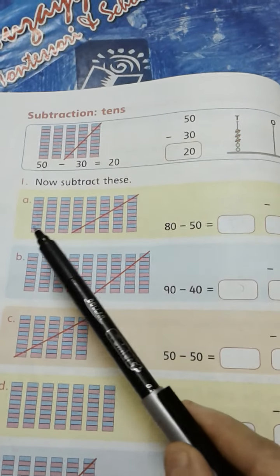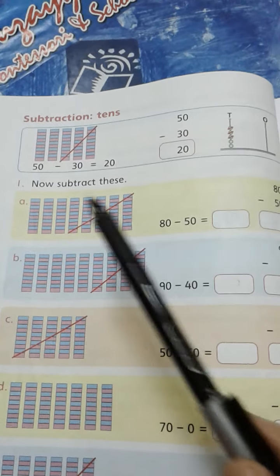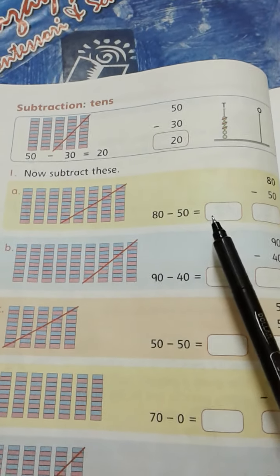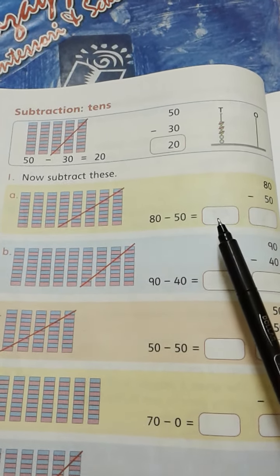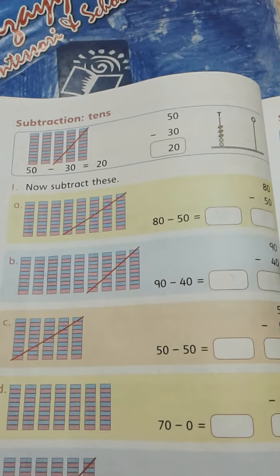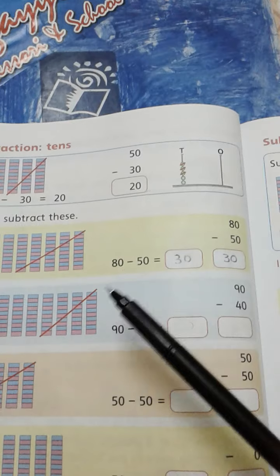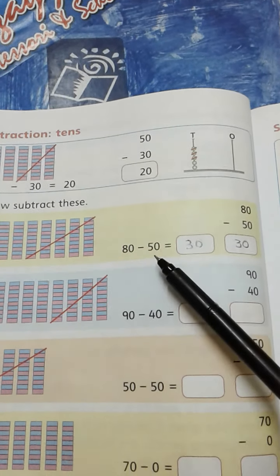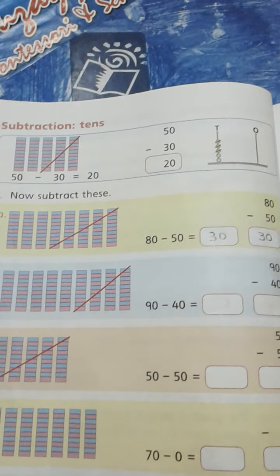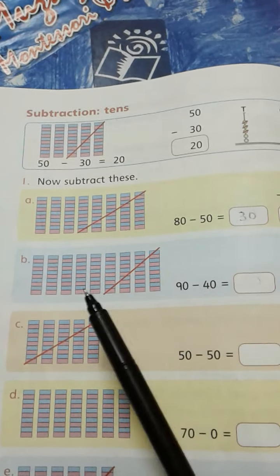So how many tens are left? Let's count: 1, 2, 3. So 3 tens means we have 30 over here. So write 30. It means 80 minus 50 is equal to 30. Let's solve another question.